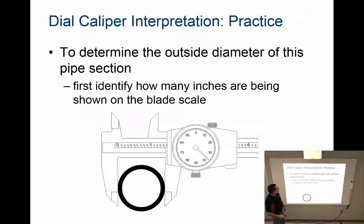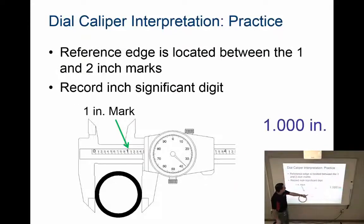Once I do that, I want to identify how many inches are shown on the blade scale. The inches are the larger numbers. I have one whole inch. I don't see the two, so I know I have one whole inch.